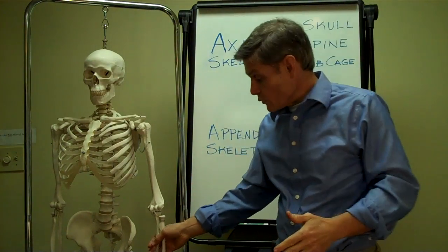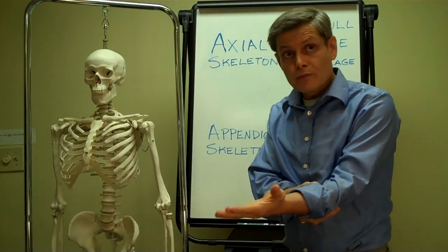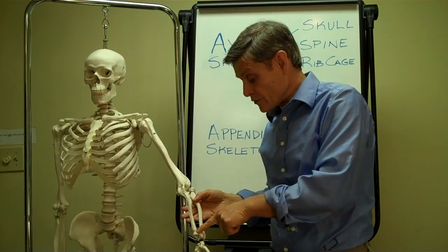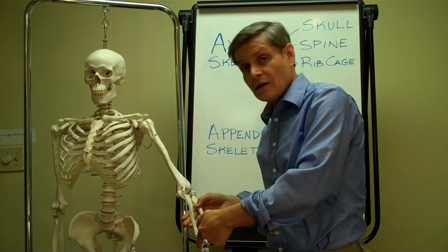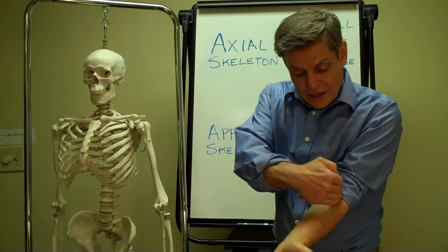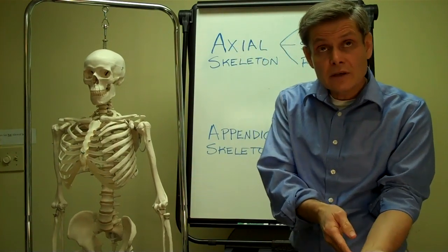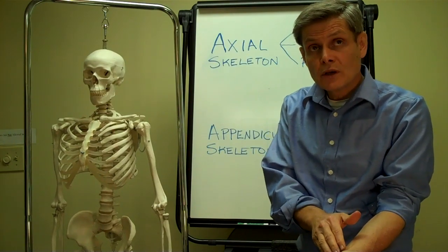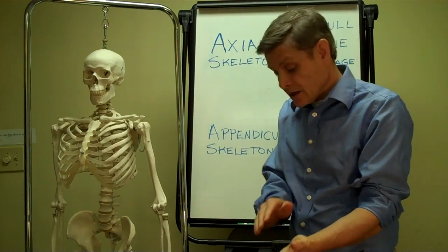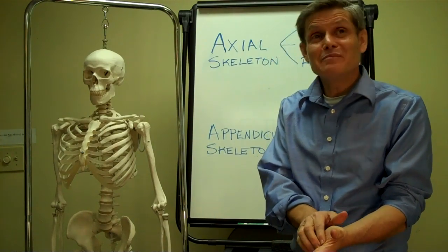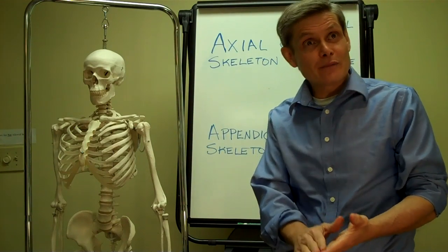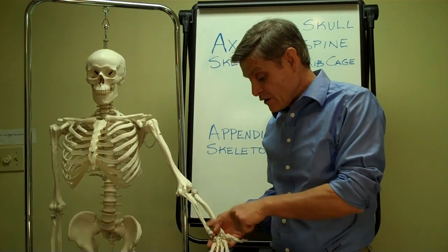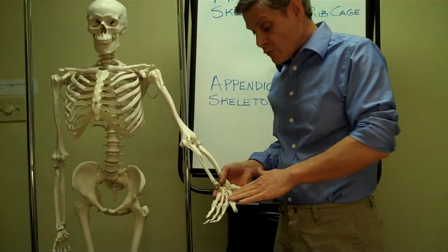Moving down to the forearm, we have two bones: the radius on the outer side and the ulna on the medial side. At the wrist itself, we have eight wrist bones called carpals. Connected to the carpals, we have the hand bones called the metacarpals, which are connected to the finger bones called the phalanges. So we have eight carpals, five metacarpals, and fourteen phalanges.